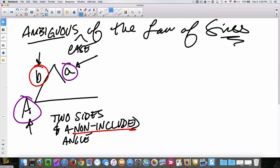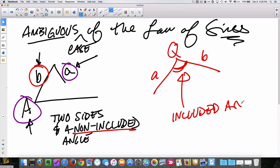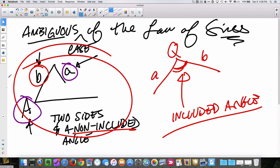What does non-included mean? Well, that really means the opposite of this. If you had this side a, this side b, and this angle, that would be two sides and the included angle, or angle in between.